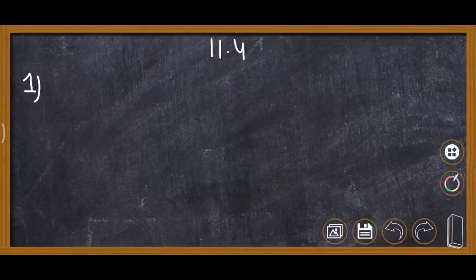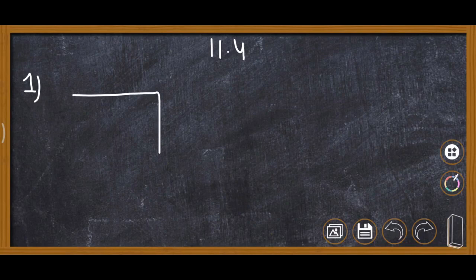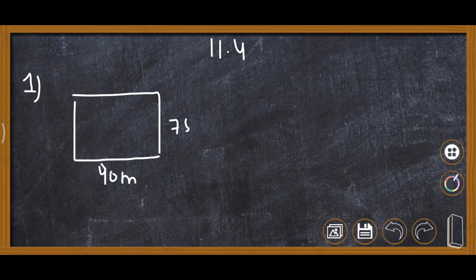Today we are doing question number one of exercise 11.4. A garden is 90 meter long and 75 meter broad.